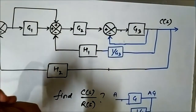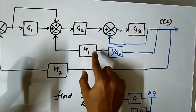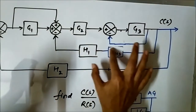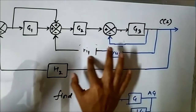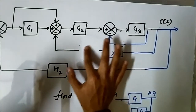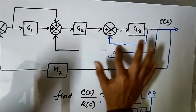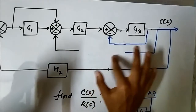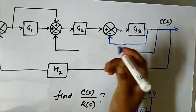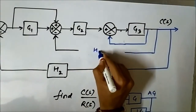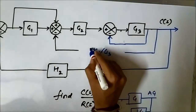Now H1 and the 1/G3 block are connected in cascade, so they should be multiplied together — it will become H1/G3. Blocks connected in cascade are multiplied together, so the combined feedback path becomes H1/G3.